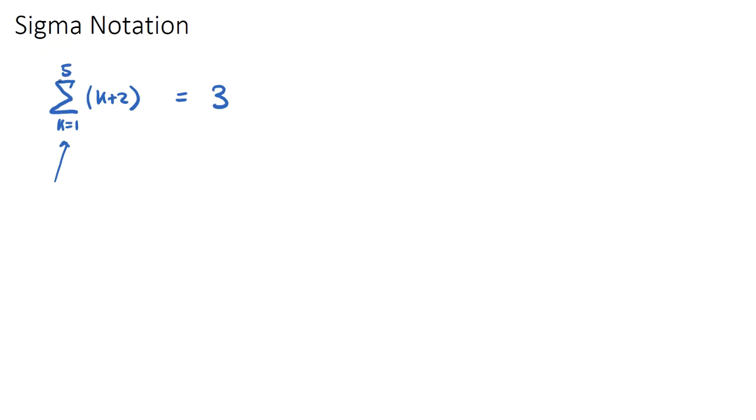Now what we then have to do is we need to sum, so 3 plus, and we need to go up to the next k value, which would be 2. You go up by all of the integers. So you go to k equals 2. If k did equal 2, you'd sub the 2 in. 2 plus 2 is 4, so 4 will be our term.